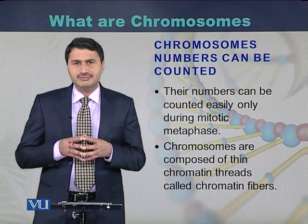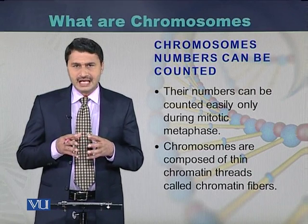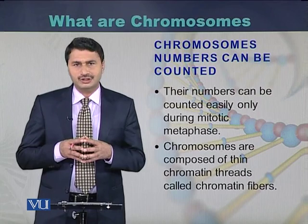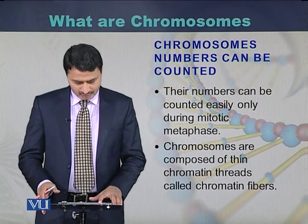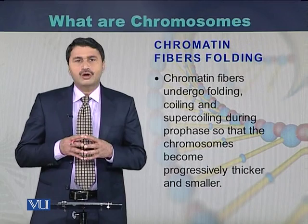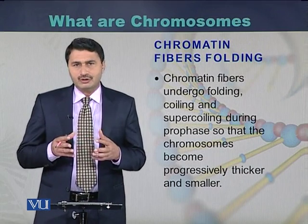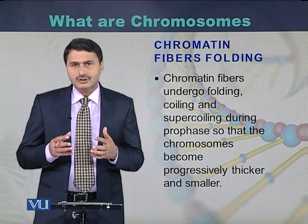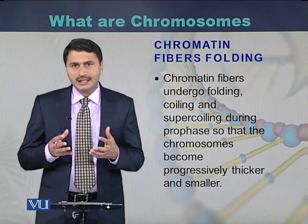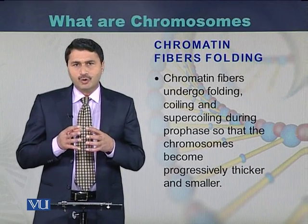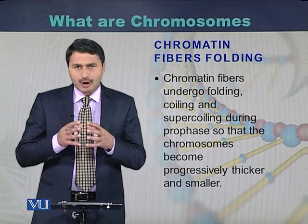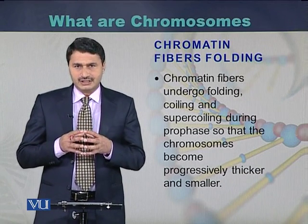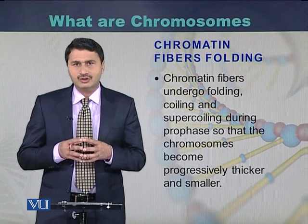Chromatin fiber is made up of two things: DNA and proteins. The name of those proteins is histone. Chromatin fiber undergoes the process of folding, coiling, and supercoiling, and ultimately adopts a specialized structure called chromosomes.